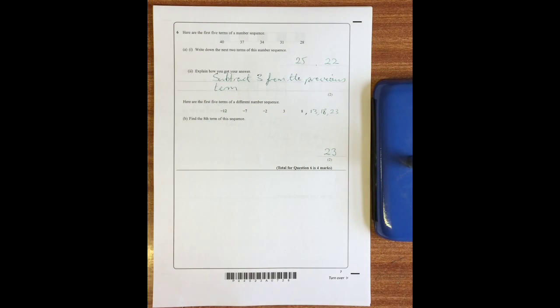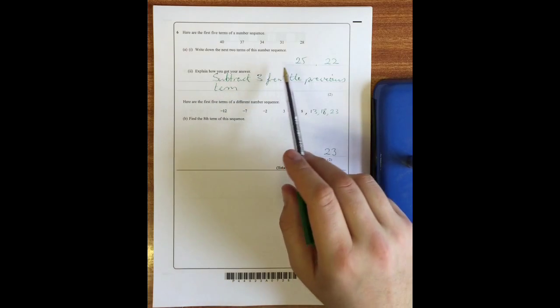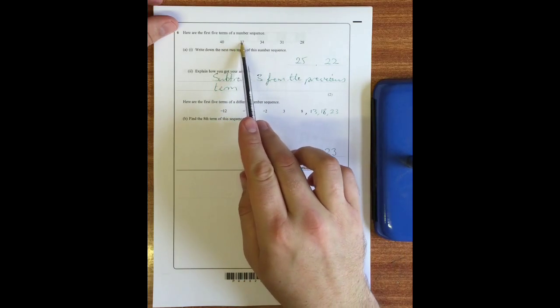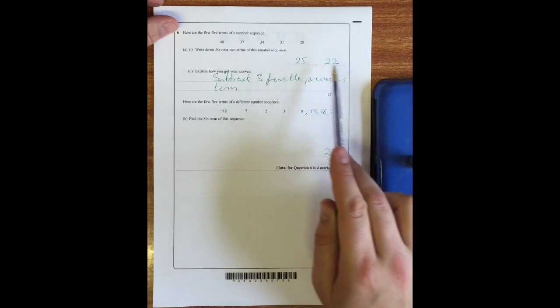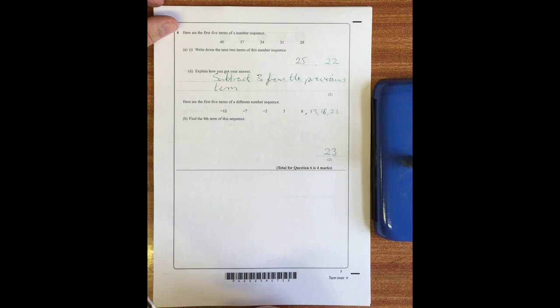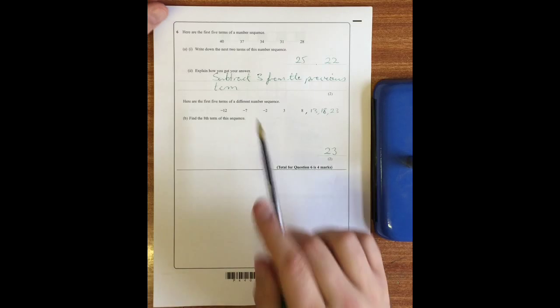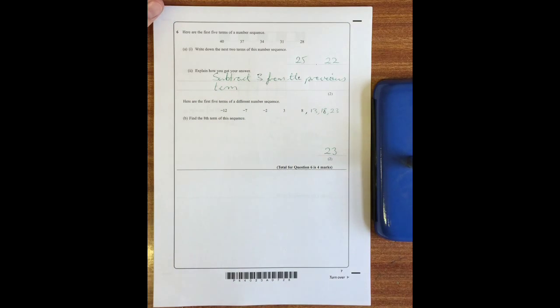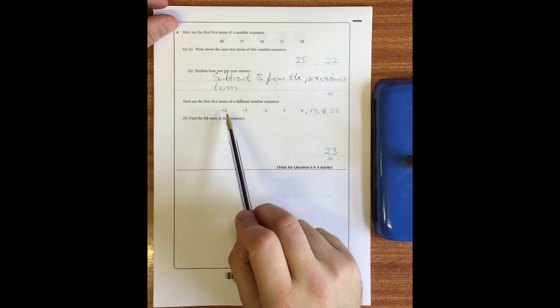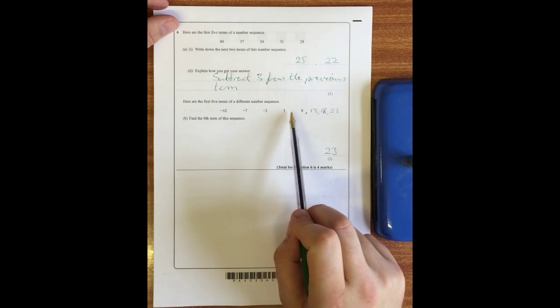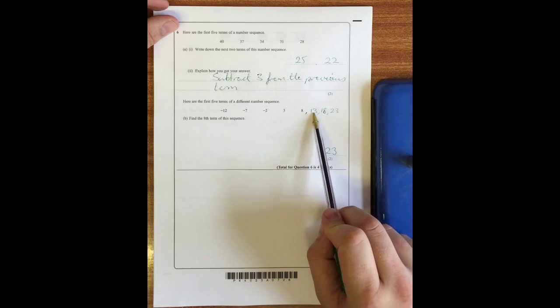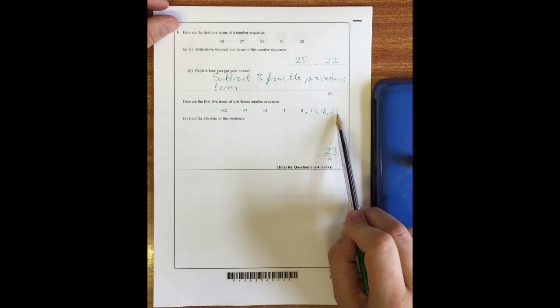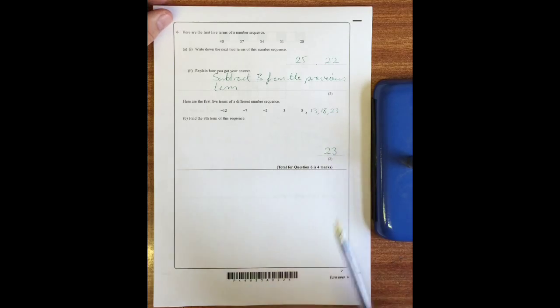Question six: here are the first five terms of a number sequence. Write down the next two terms of this sequence. Well it's going down or decreasing by three, so if we take three off 28 we get 25, take three off again we get 22. Explain how you got your answer: subtract three from the previous term. Here are the first five terms of a different number sequence. Find the eighth term. We've got the first, second, third, fourth and fifth, so the sixth - you can see it's going up by five each time - will be 13, then 18, then 23 for the eighth term, so the answer is 23.